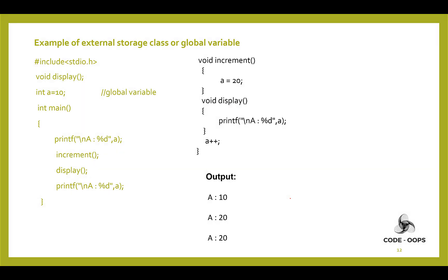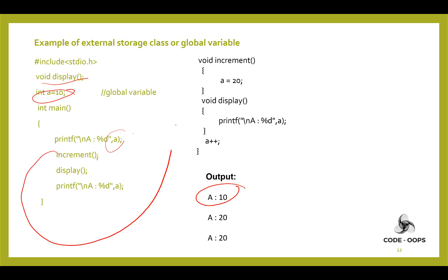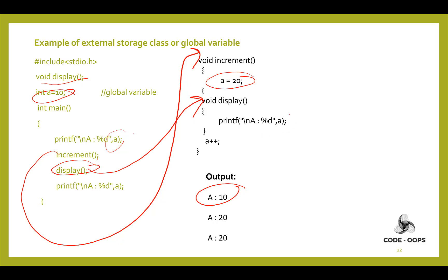Let's see an example of the external storage class. A global variable 'a' is declared and assigned 10. Inside the main function, 'a' is printed — value is 10. Then the increment function is called, which changes 'a' to 20. After control returns to main, the display function is called, which displays the value of 'a' as 20, showing how one function can modify and another can read the external variable.